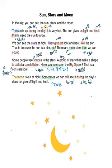So we can see stars at night, they, the stars, give off light and heat. Give off means 무엇을 내다. So light, 빛을 내다, 열을 내다. Like the sun, 무무처럼, 태양처럼, 해처럼. That is because the sun is a star, too. So the sun is a star like the other stars.